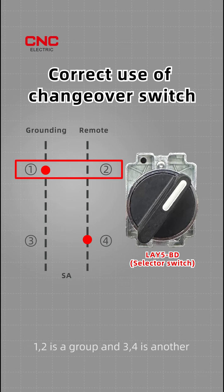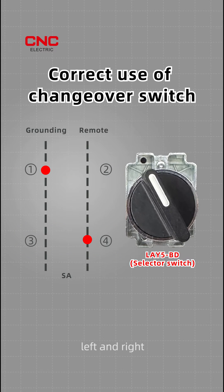1 and 2 is a group, and 3 and 4 is another. Two dotted lines indicate two gears, left and right.